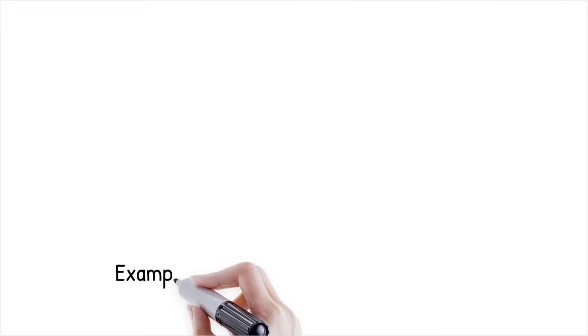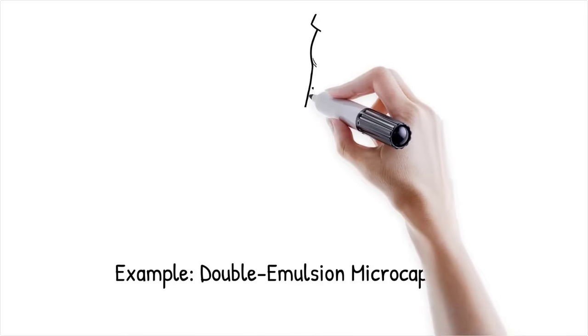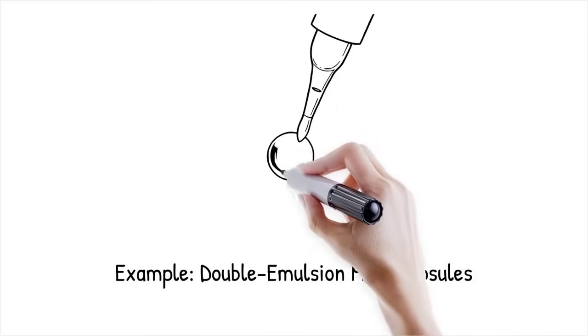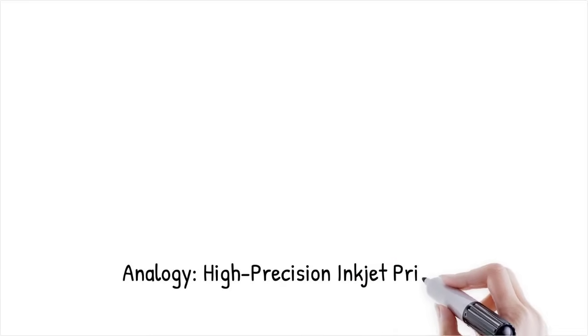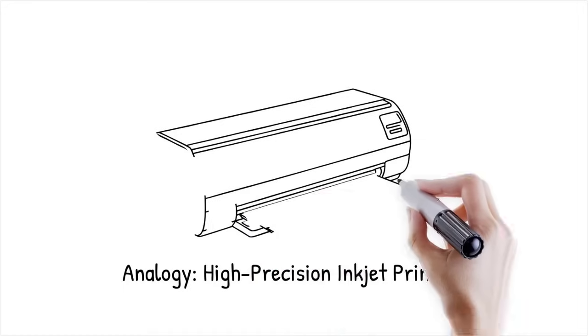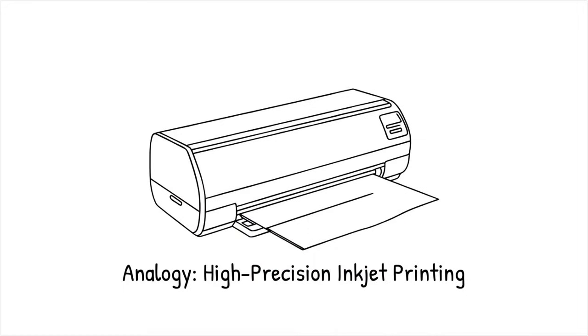Microfluidic synthesis enables the creation of double-emulsion microcapsules with a polymeric shell, improving stability and enhancing controlled release in structural composites. It works like a high-precision inkjet printer, ensuring each microcapsule is formed with the exact composition and size needed for optimal function.